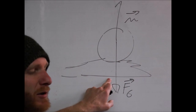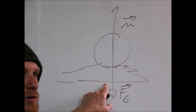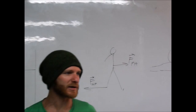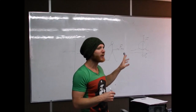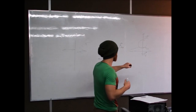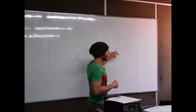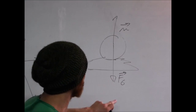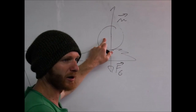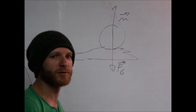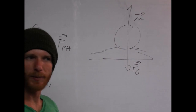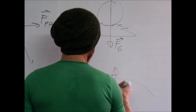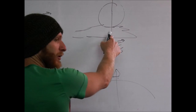¿La normal es la reacción a la gravedad? No. La normal nunca es la reacción a la gravedad. ¿Por qué? Porque actúa sobre el mismo cuerpo, actúa también sobre la pelota. ¿Cuál es la reacción a la fuerza de gravedad? La fuerza de gravedad es la fuerza de la tierra sobre la pelota. La reacción es la pelota sobre la tierra: la pelota atrae la tierra hacia arriba.